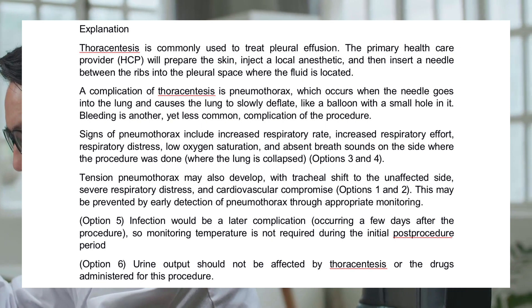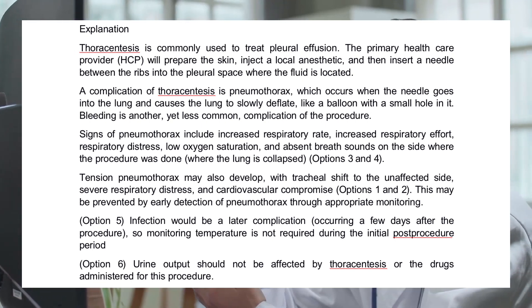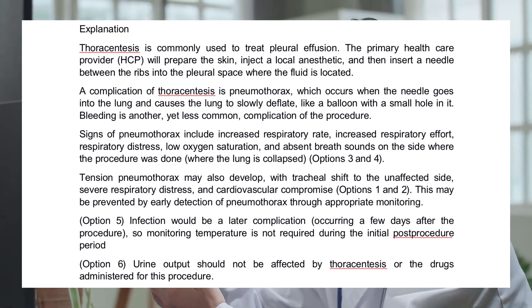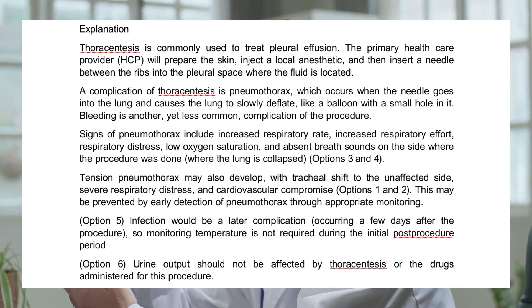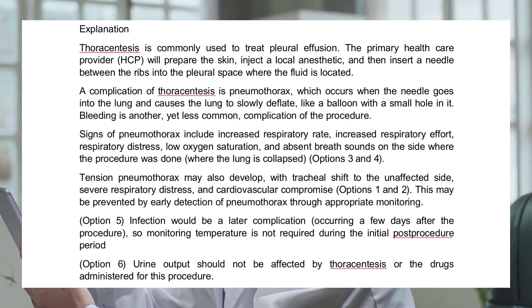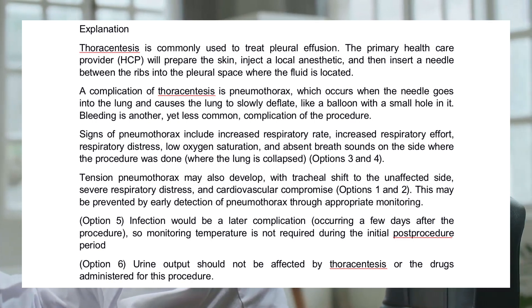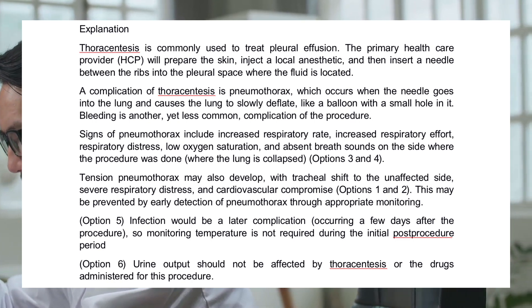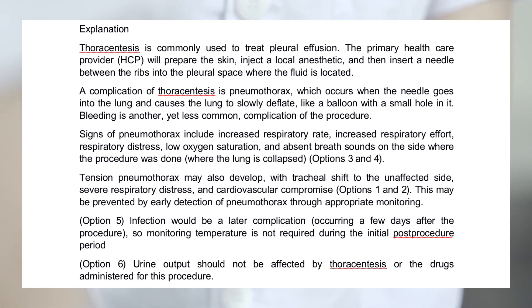Explanation. Thoracentesis is commonly used to treat pleural effusion. The primary healthcare provider will prepare the skin, inject the local anesthetic, and then insert a needle between the ribs into the pleural space where the fluid is located. A complication of thoracentesis is pneumothorax, which occurs when the needle goes into the lung and causes the lung to slowly deflate, like a balloon with a small hole in it. Bleeding is another, yet less common, complication of the procedure.